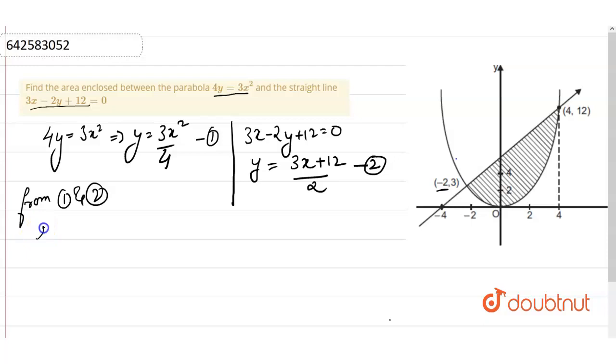The required area is going to be the integral from minus 2 to 4 of 3x squared by 4 dx, plus the integral from minus 2 to 4 of 3x plus 12 by 2 dx. This is minus 2 to 4, lower limit and upper limit.